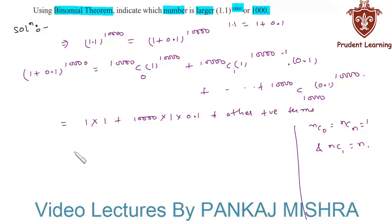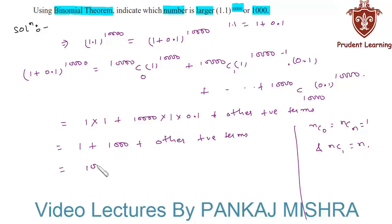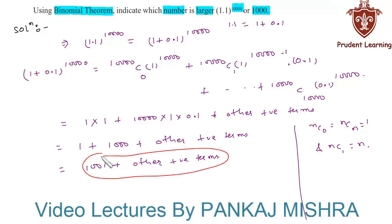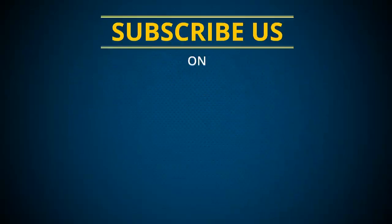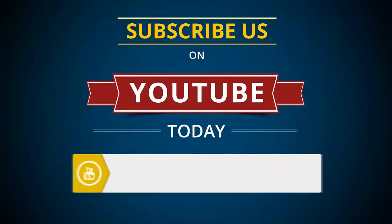This gives us 1 + 1000 = 1001, plus other positive terms. Since all remaining terms are positive, this quantity is always greater than 1000. Hence, 1.1 raised to 10,000 is larger than 1000. This completes our solution. Thank you.